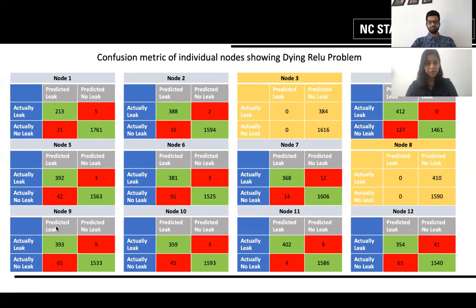I've included the confusion metric for each individual nodes. You may have noticed that node 3 and node 8 act differently from the rest of the nodes because they're always predicted as no leak and in no situation is the leak predicted accurately.